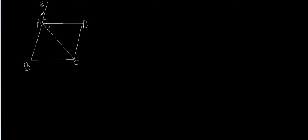Now let's solve a question. We have a quadrilateral ABCD, and we have this external angle EAC which has been bisected by line segment AD. Triangle ABC is isosceles, with AB equal to AC. Also, we have that AB is parallel to DC. Now we have to prove that angle DAC equals angle DCA, and also that quadrilateral ABCD is a parallelogram.